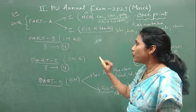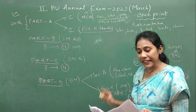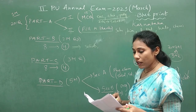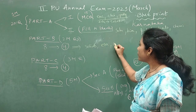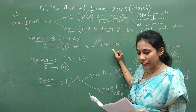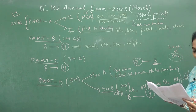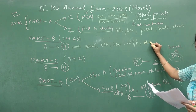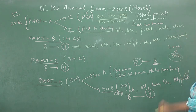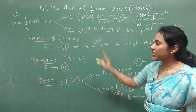Coming to Part B — the 8 two-mark questions come from the following chapters: one question each from solids, electrochemistry, and kinetics — three physical chemistry chapters. Then one two-mark question from p-block for the inorganic side. For organic chemistry: one question from alcohols/phenols/ethers, one from aldehydes/ketones/carboxylic acids, and two questions from chemistry in everyday life. That gives us 8 questions total.